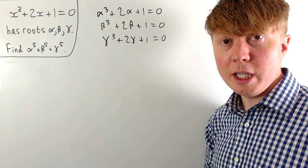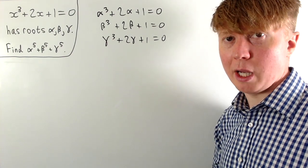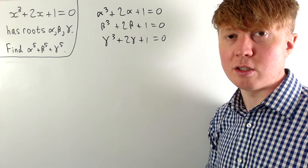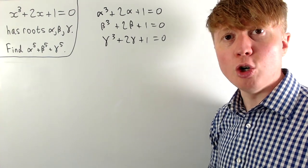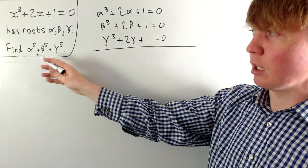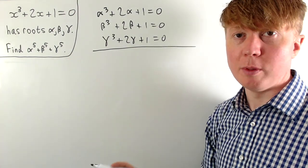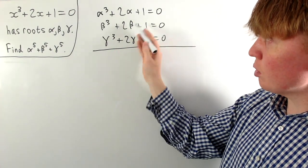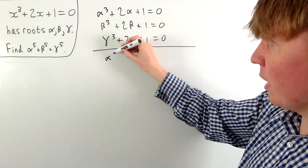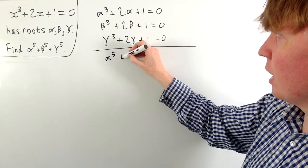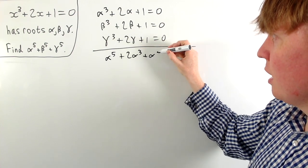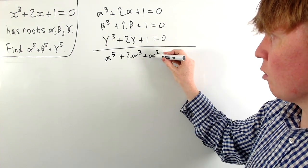To extract information about the fifth powers, we multiply each equation by alpha squared, beta squared, or gamma squared respectively. Multiplying the first equation by alpha squared gives: alpha to the five plus two alpha cubed plus alpha squared equals zero.